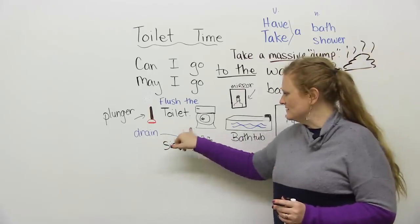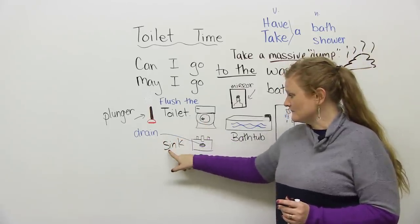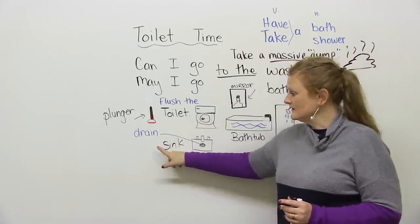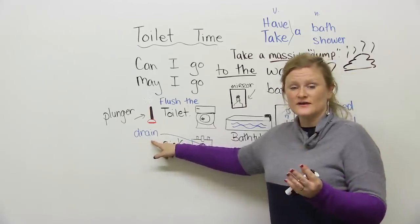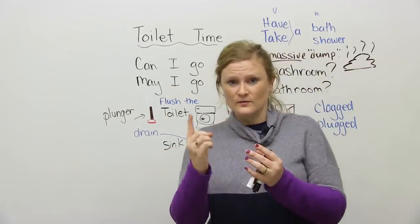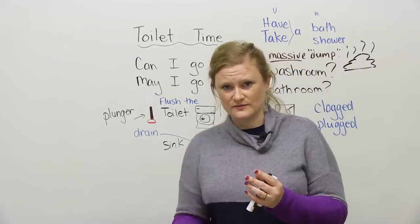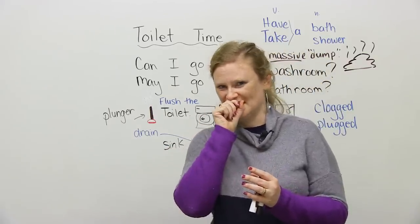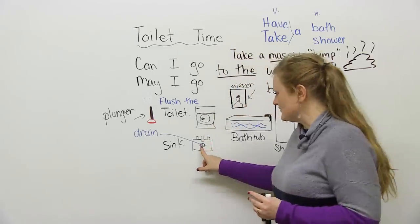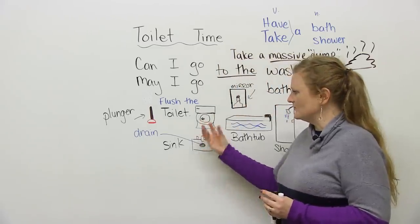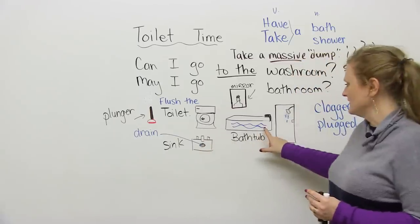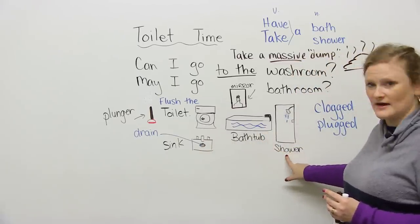What happens in a toilet or in a sink is you have a drain. A drain is a hole at the bottom where all the water goes into. It goes to magic land. So the sink and the toilet both have a drain, as does your bathtub and your shower.